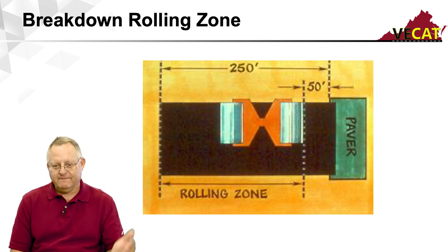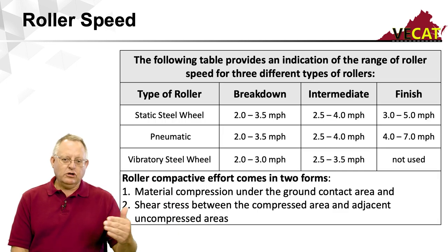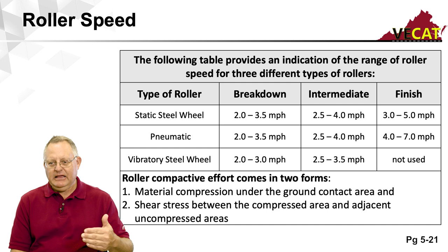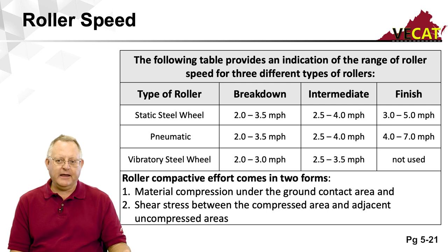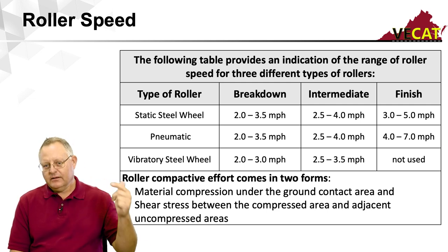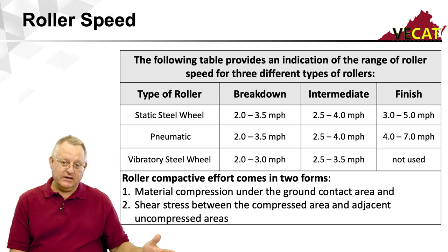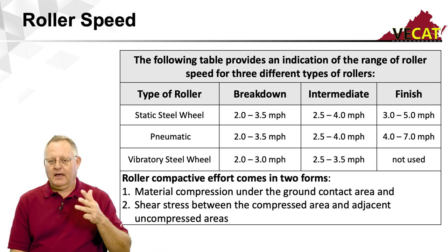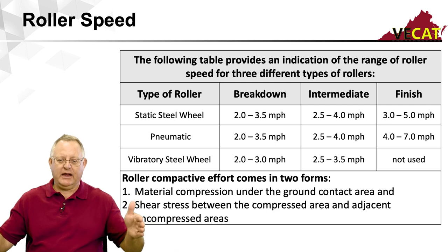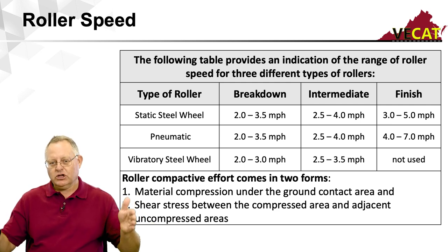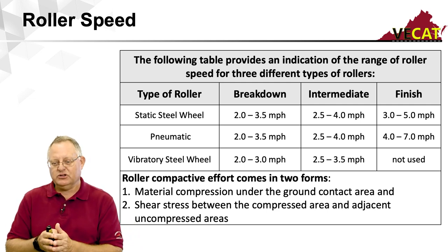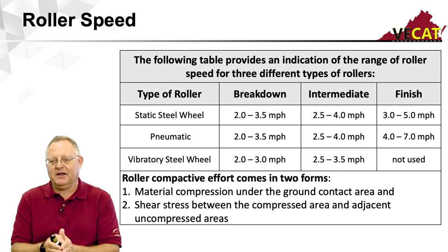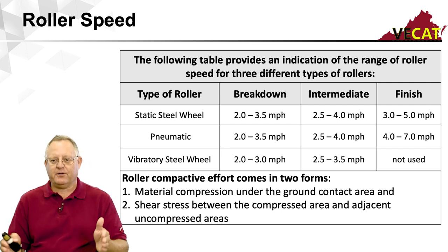The intermediate roller comes next, followed by the finish roller. When considering roller speed, the breakdown, intermediate, and finish rollers each have appropriate speed ranges. Remember: the slower you go, the more compaction you get; the faster you go, the less compaction you get. That is why you see speed ranges rather than definite numbers — it varies project to project.